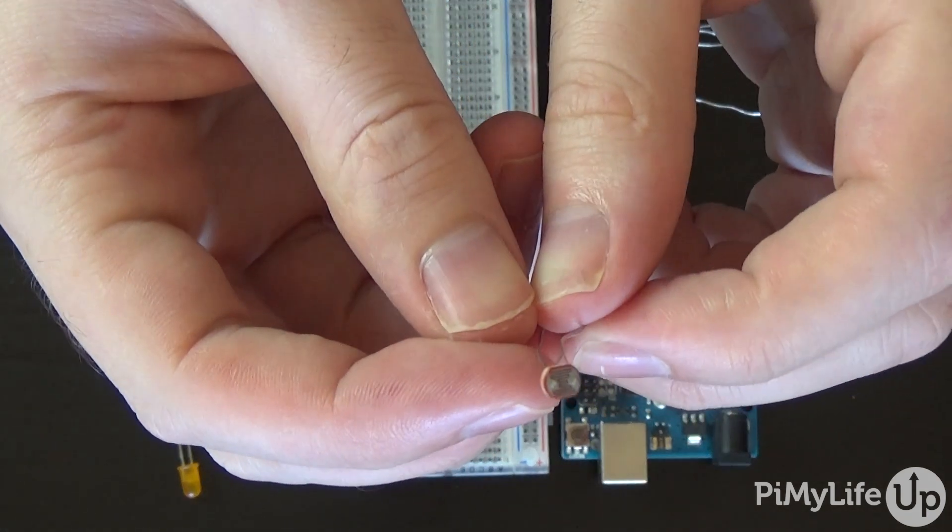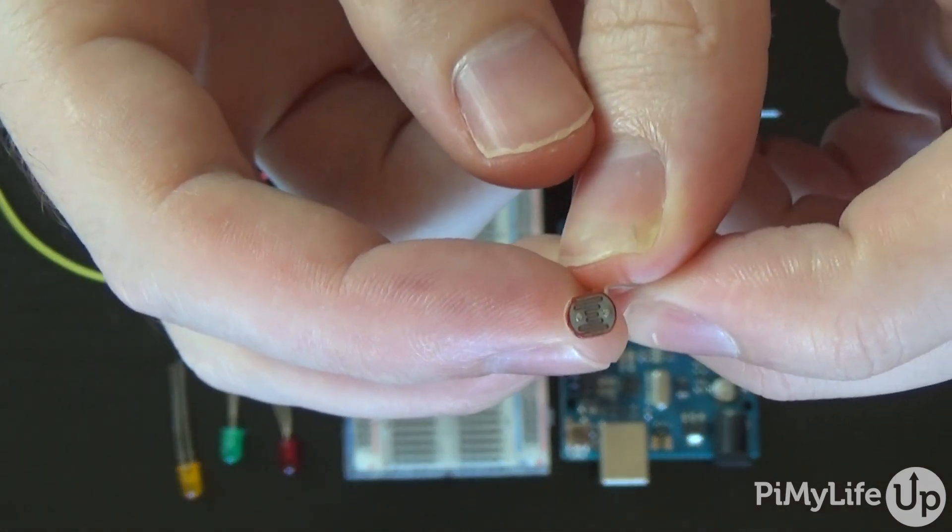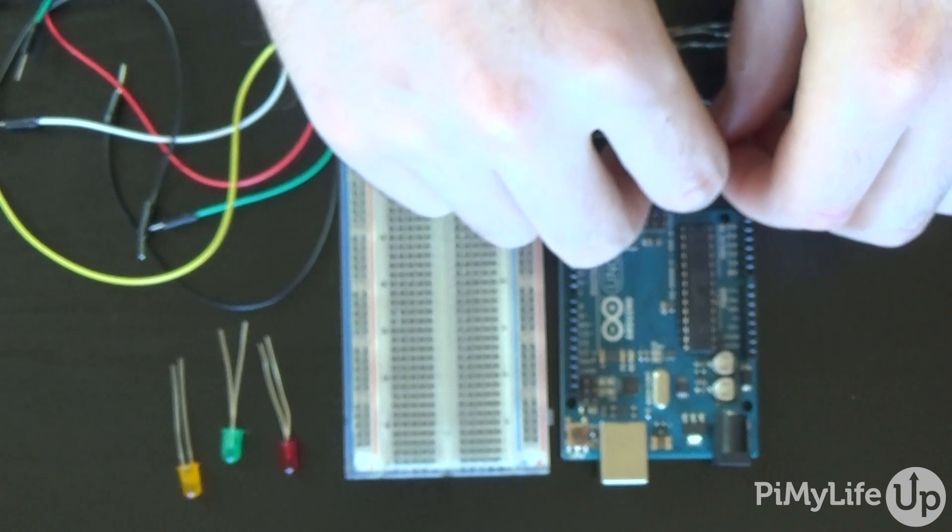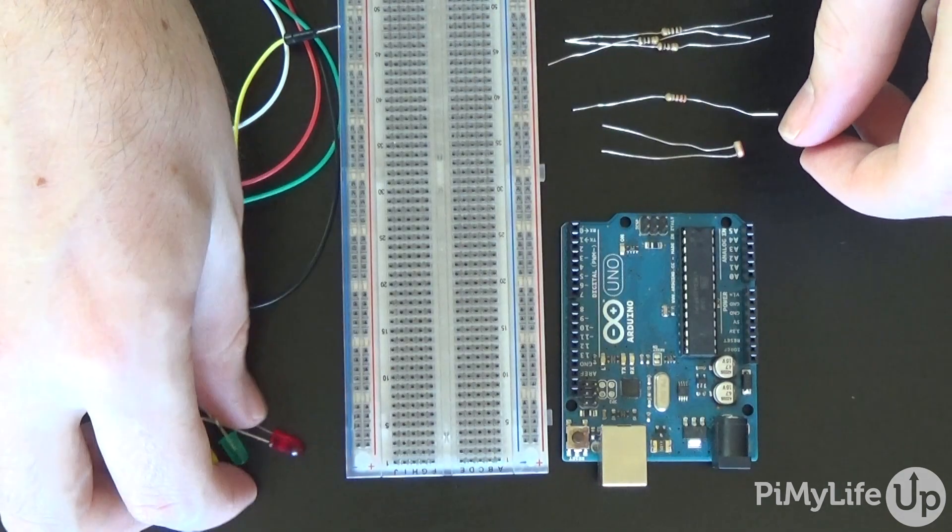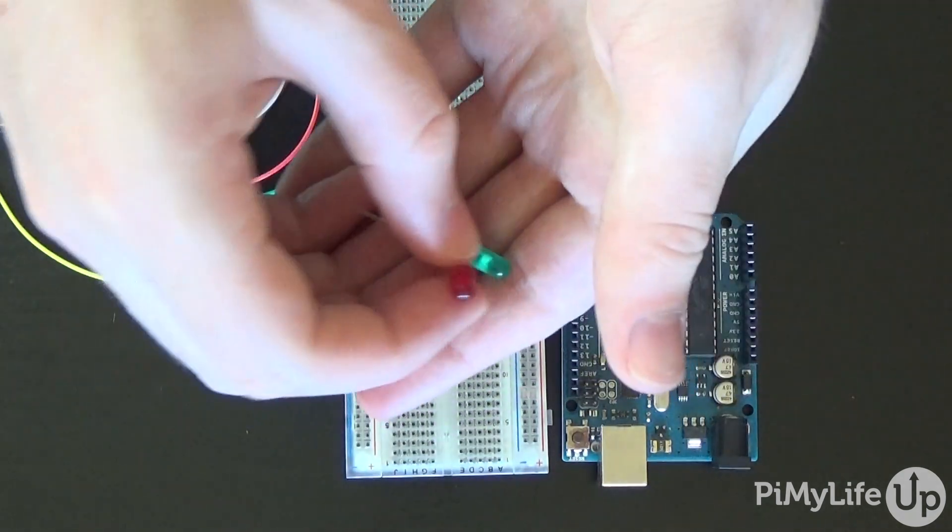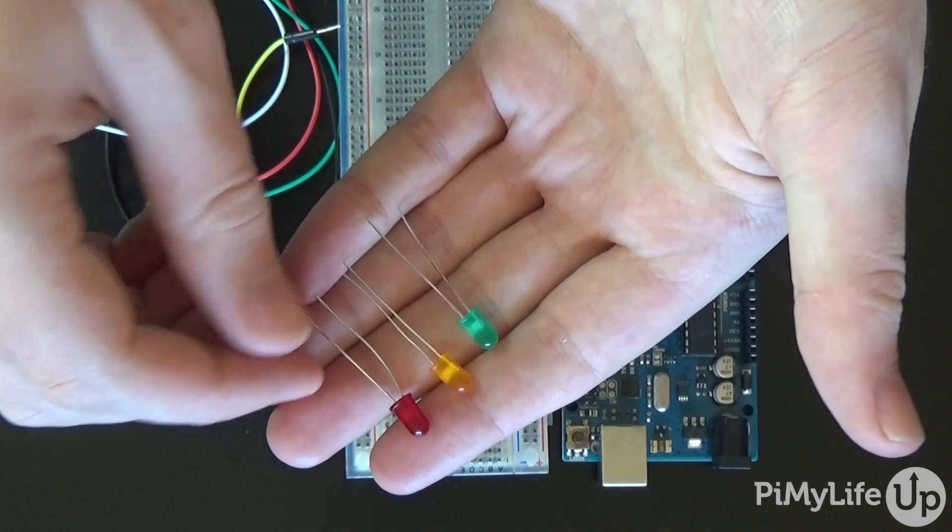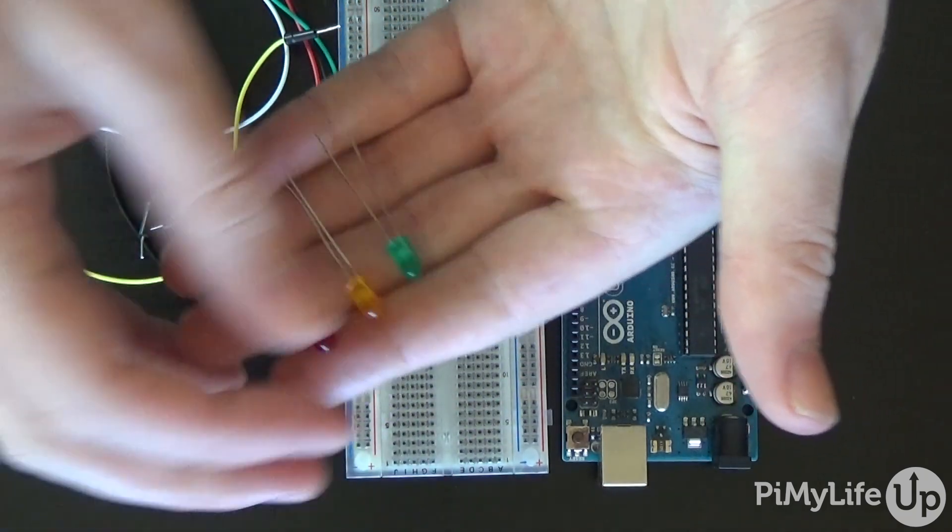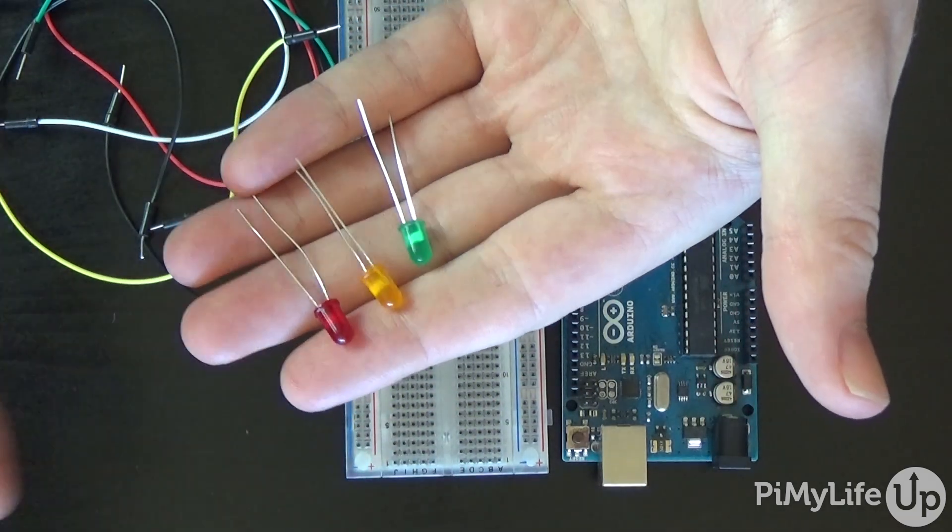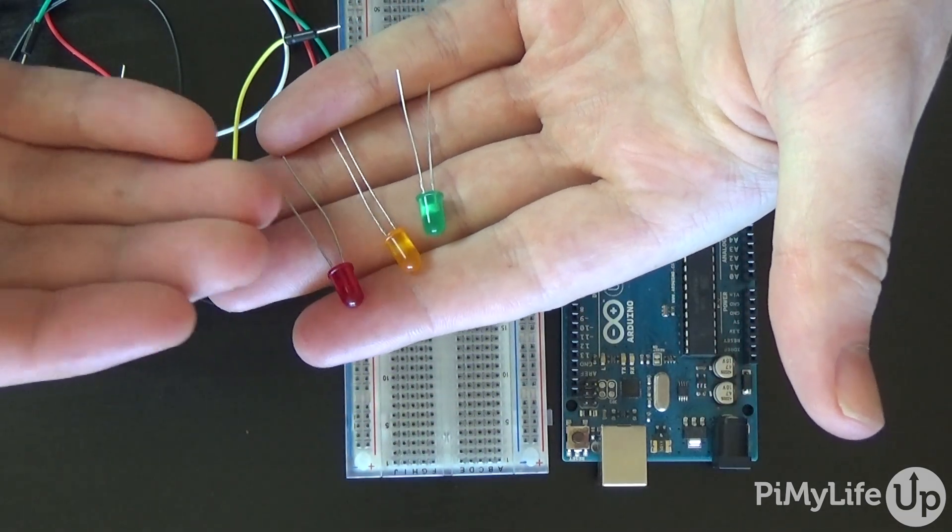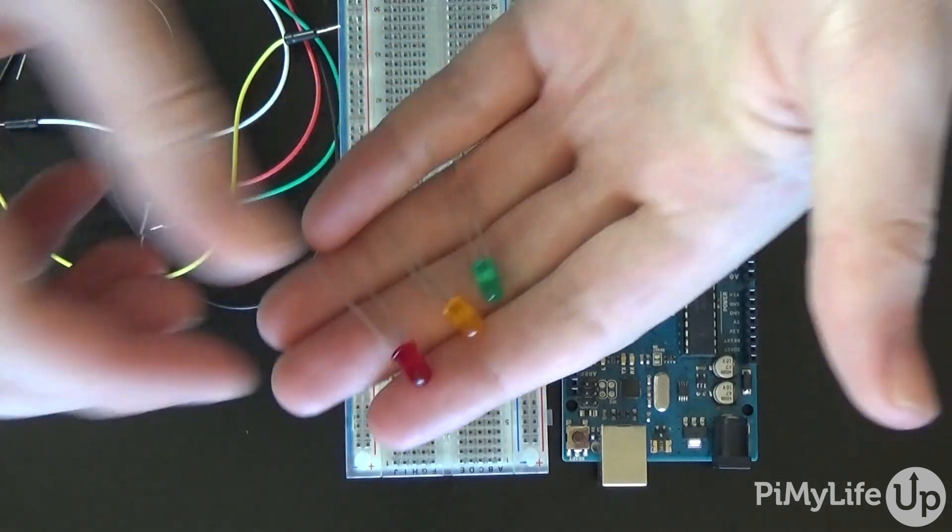The LEDs in our circuit will represent the current amount of resistance across the photo resistor. Green will be when it's at low resistance or in lots of light. Yellow will be when it's at medium resistance or there is shade across it. Finally, red will represent when it's at high resistance or in the dark.